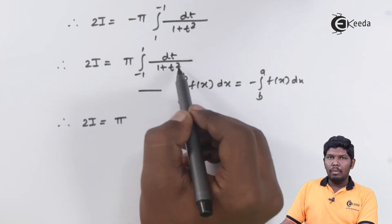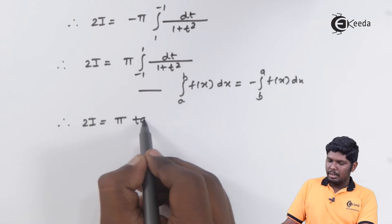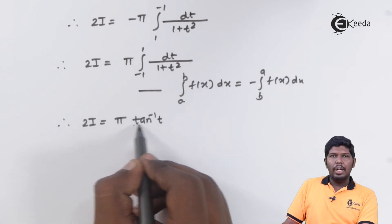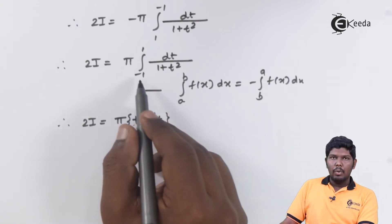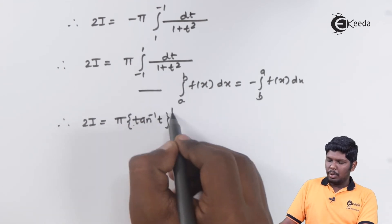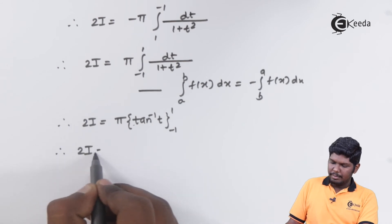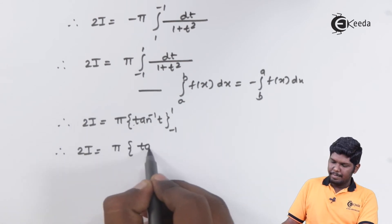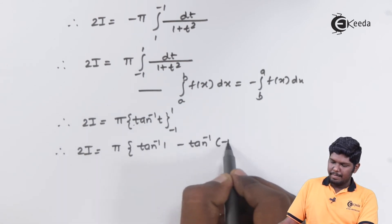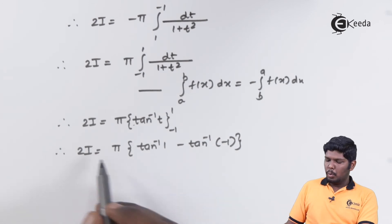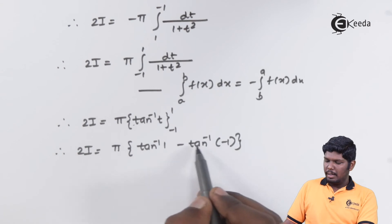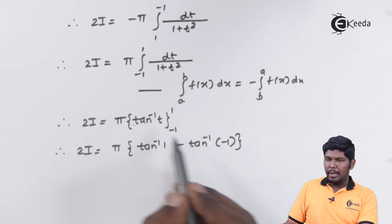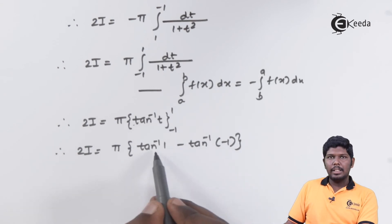Integral of 1 upon 1 plus t square will give you tan inverse t within limits minus 1 to 1. This will give you 2i is equal to pi times tan inverse of upper limit is 1, minus tan inverse of lower limit is minus 1. Taking this minus sign outside, minus of minus will give you plus.